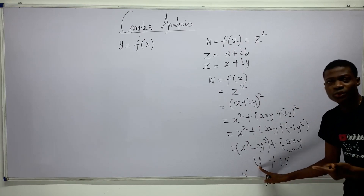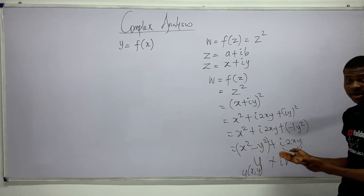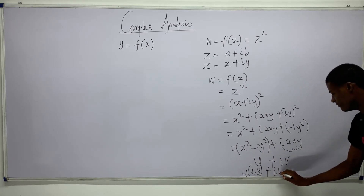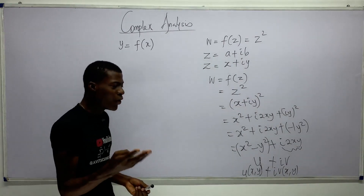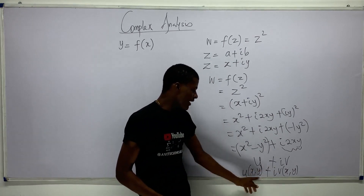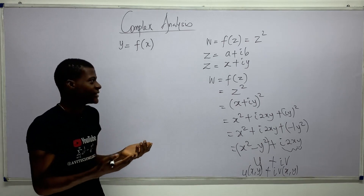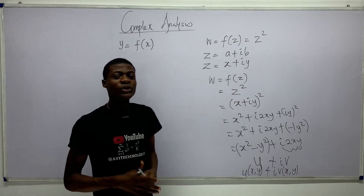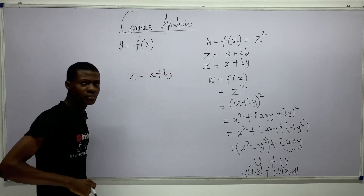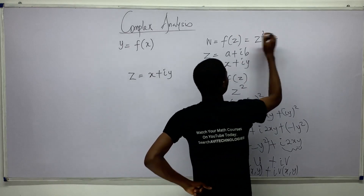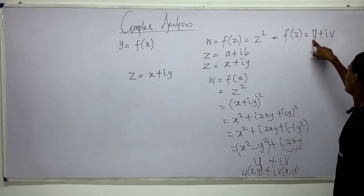So u is defined by x and y — specifically u equals x squared minus y squared. And v is also defined by x and y — v equals 2xy. Notice we now have four real quantities: u, v, x, and y. This is why graphing complex functions is much more difficult than real analysis.